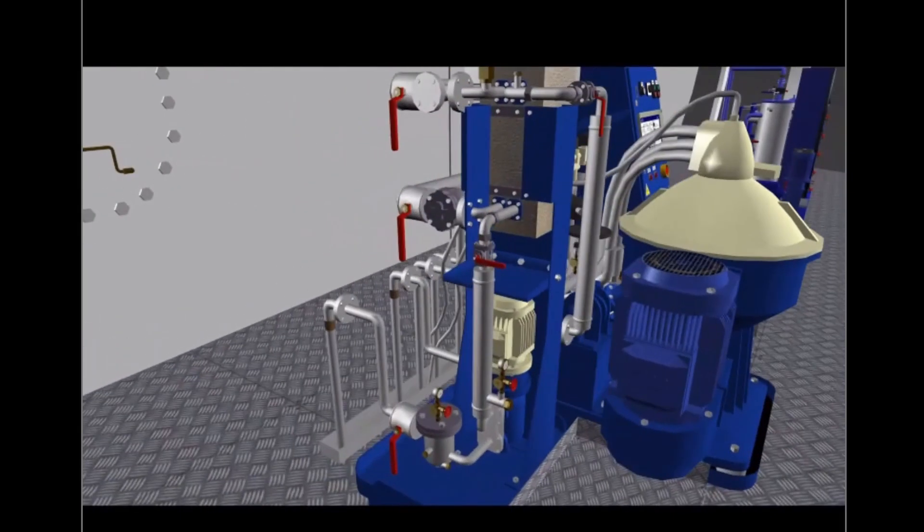Open the steam inlet and the steam outlet valve on the heater. Open the separator feed pump suction valve. Open the heater oil inlet valve and the heater oil outlet valve.